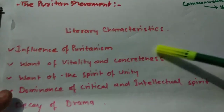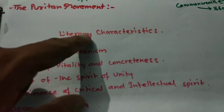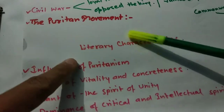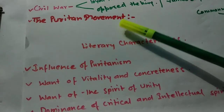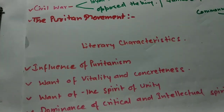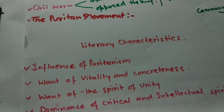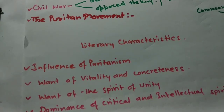Now we can talk about the literary characteristics of the age. Before going further, let's also talk a little about the Puritan movement, because it will make our thinking clear about the works of Milton. From tomorrow, we will be talking about the works by Milton in depth. The Puritan movement had two chief objects: the first was personal righteousness, and the second was civil and personal liberty.